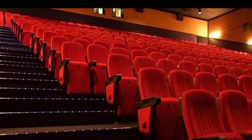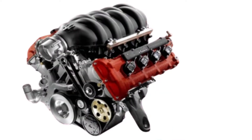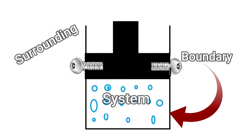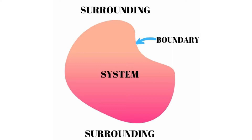Similarly, if I want to study a refrigeration system in detail, then the refrigerator is my system. In an IC engine, if I want to study the behavior of combustion, the engine is my system. So a system means we can consider any part of the universe as a system. The system is separated from the surroundings by a boundary; the surroundings means everything outside the boundary.